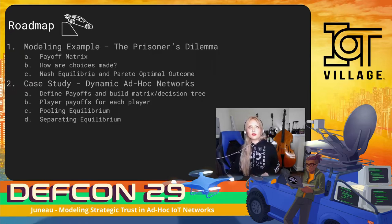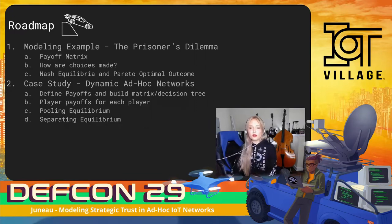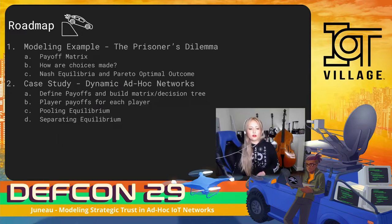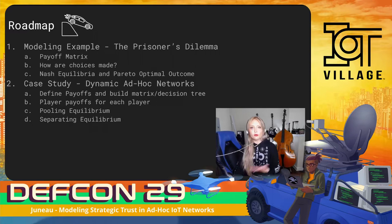A little bit of a roadmap: we're actually going to start off with a common game theory example, the prisoner's dilemma, to get into how we determine payoffs and how we break down these scenarios step by step to determine how choices are made and what the logical outcomes of the games actually are. Next, we'll take this to our case study on dynamic ad hoc networks based off of 5G vehicle networks. We're going to start by defining payoffs and building out a decision tree and matrix. After defining the payoffs, we'll start to solve for the equilibriums, which are the logical outcomes of the game, and see how players' choices inform those of others.